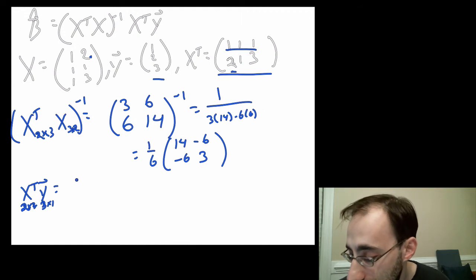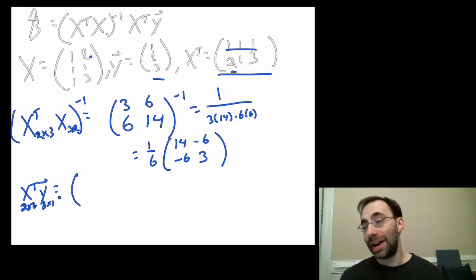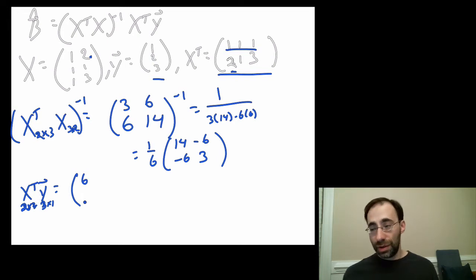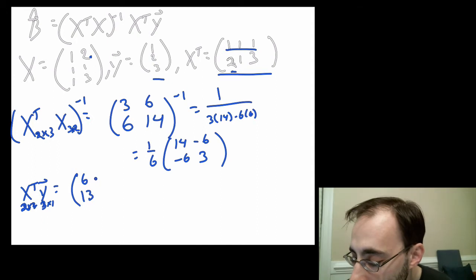So we can do that and multiply it out. The first one is one, one, one dotted with one, two, three. That gives you six. And the second one is two, one, three dotted with one, two, three. That's two plus two is four plus nine is 13. There we go. So there is X transpose y.